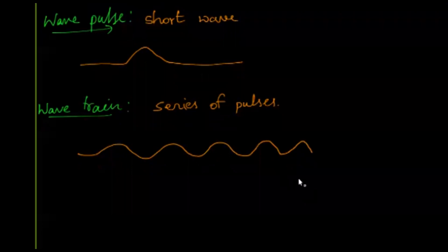In the case of a wave train, it is a combination of many pulses produced over a long period of time. More pulses are produced continuously. You can produce this type of pattern by shaking a rope up and down continuously — it creates a series of pulses, forming a wave train.